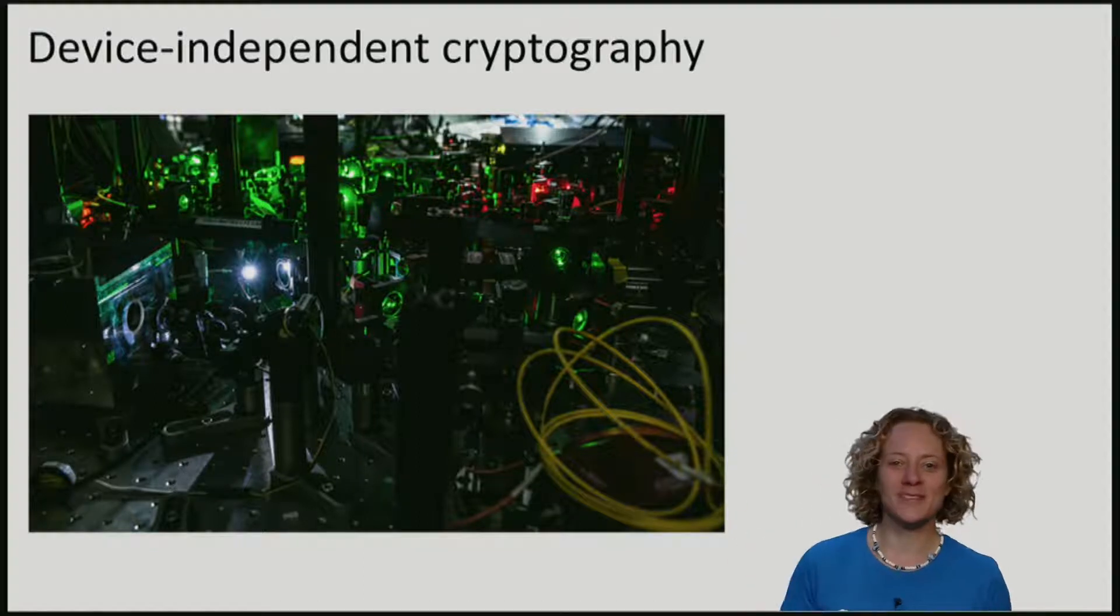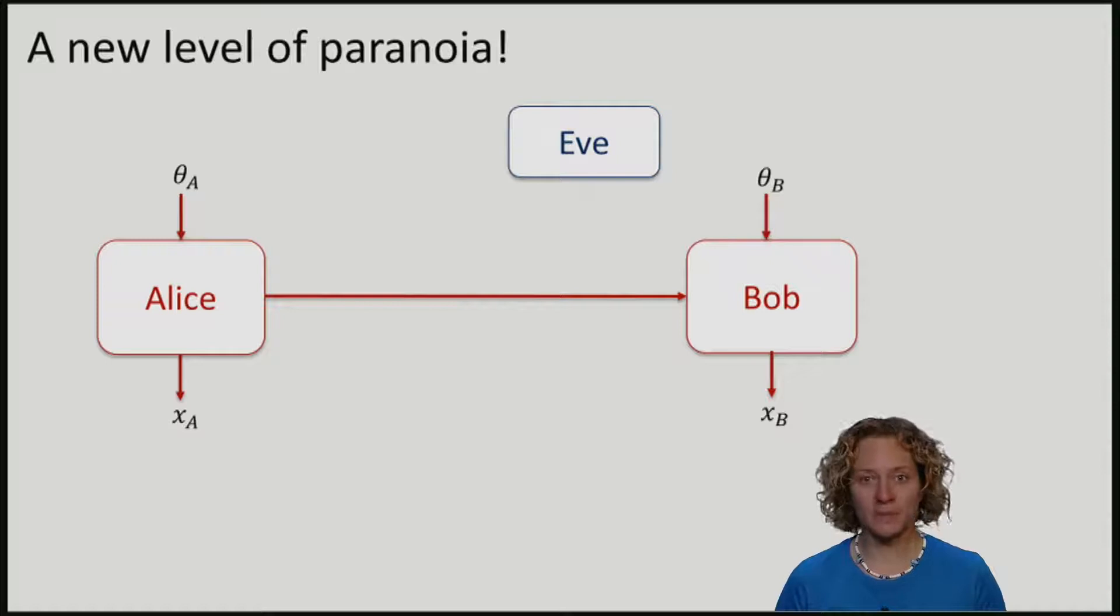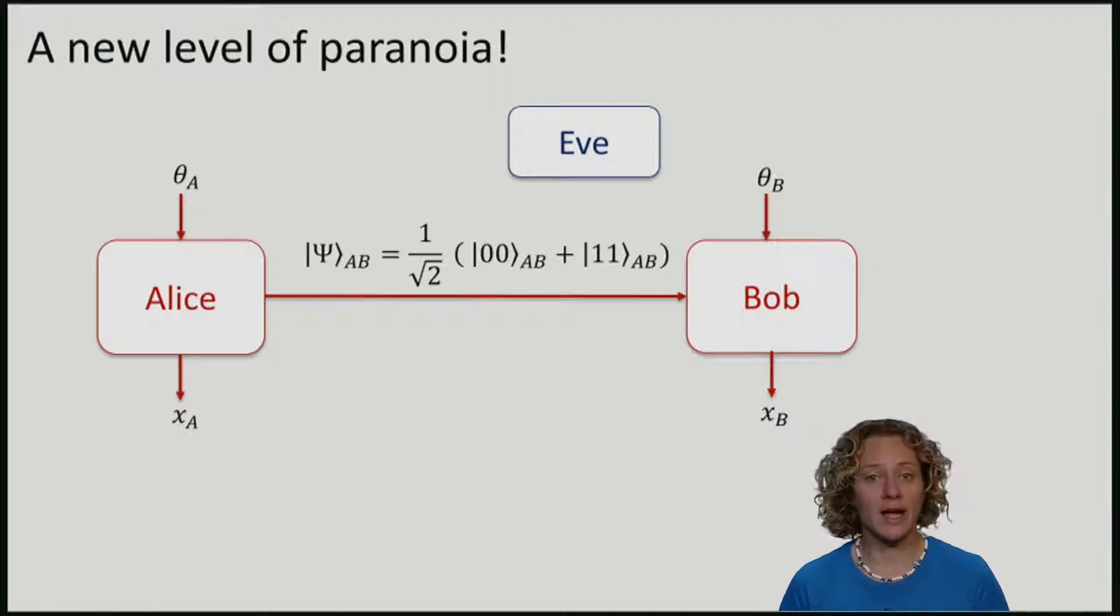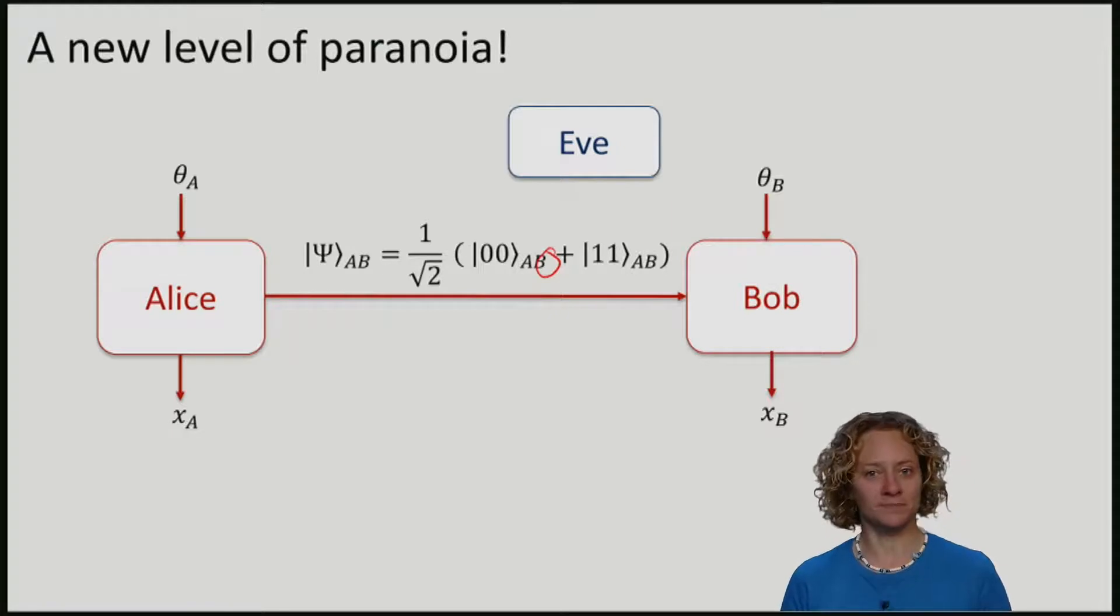To explain this more formally, what we are going to do is we are going to take things to a new level of paranoia. Previously, we had said that Alice and Bob, for example, share a maximum entangled state. Or Alice prepares an EPR pair and she sends the qubit B to Bob. And sure enough, the state that Alice, Bob and Eve would share at the end would of course at least be consistent with some attack that Eve has performed only involving qubit B. But Alice actually did know that she started with a perfect EPR pair. She only has to measure the qubit, one qubit, of the state she prepared. Now we are going to assume that we have no clue what the state is.